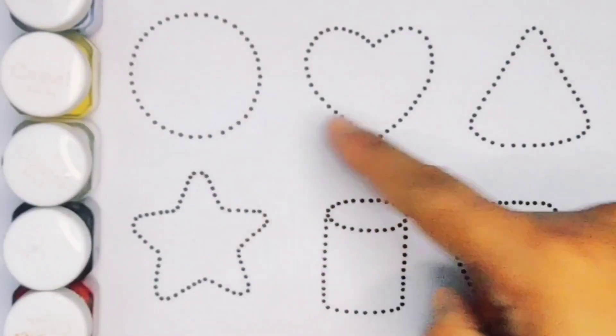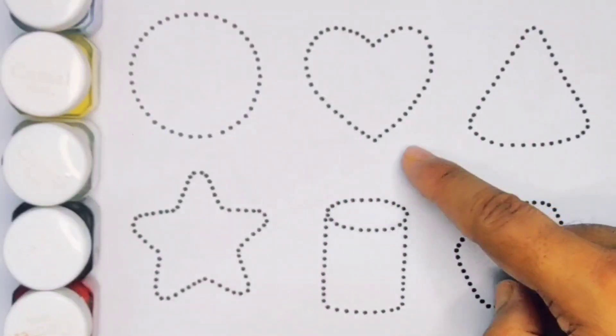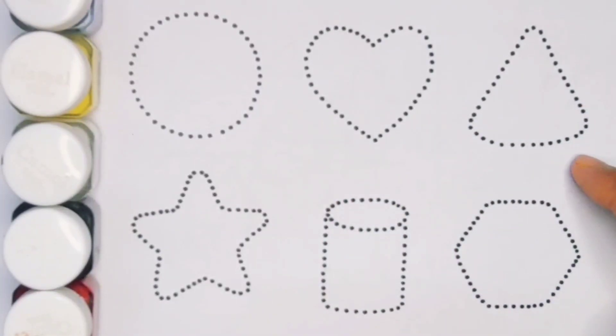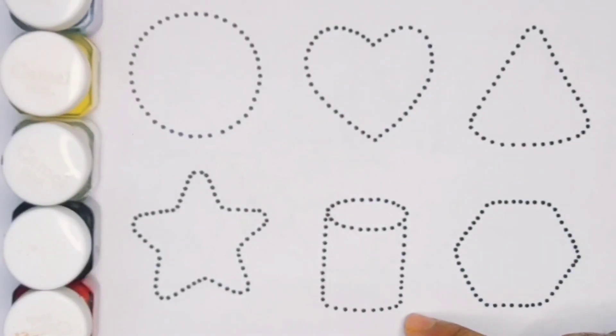Now let's learn the 2D shapes: Circle, Heart, Triangle, Star, Cylinder, and Hexagon.